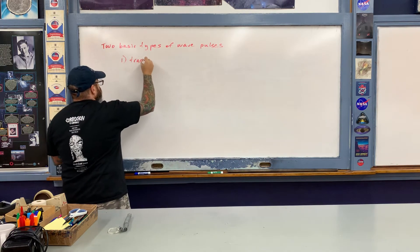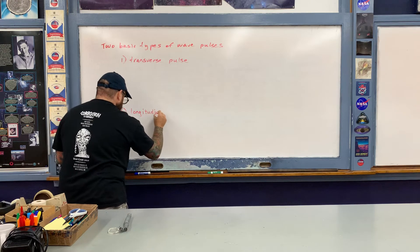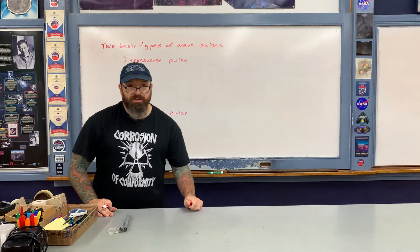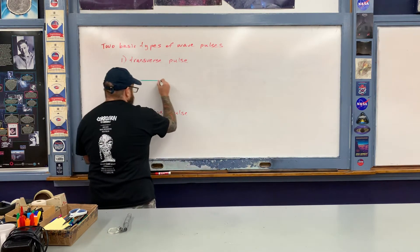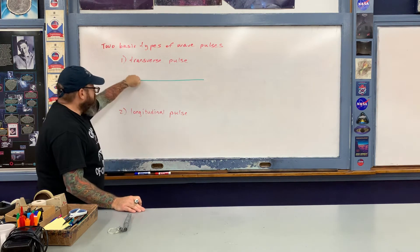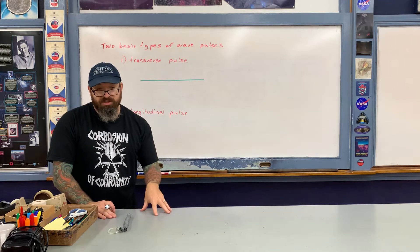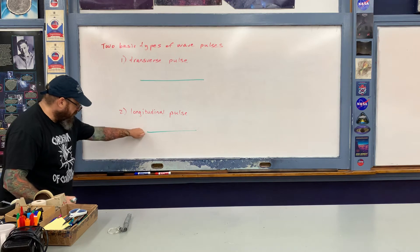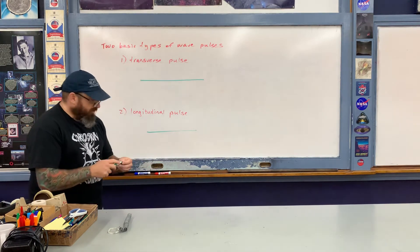The first type is referred to as a transverse pulse, and the second is called a longitudinal pulse. I'm going to demonstrate both using a spring stretched out on the floor. For the transverse pulse, I'll take my hand and disturb the spring in a direction perpendicular to the spring, and the disturbance propagates down the length of the spring. For the longitudinal pulse, I'll pull the spring towards me and snap it, producing another type of pulse that propagates down the length of spring.